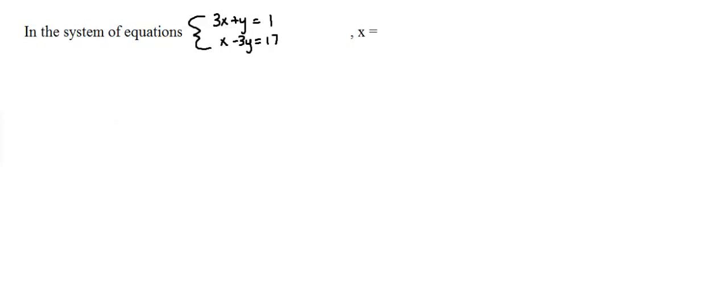So if you notice here, we have two equations with two unknowns. There are two different ways to solve this problem. The first way is called substitution and that's where you solve for one of the variables and you plug back in to the other equation.